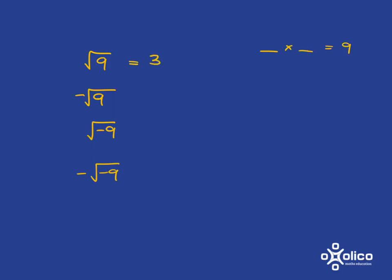In this next one, again, we just want the negative of that square root of 9. We've just worked out that the square root of 9 is 3, and we just want the negative of that. So this is just negative 3.